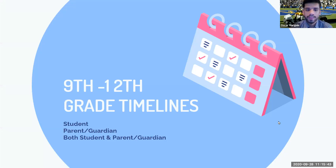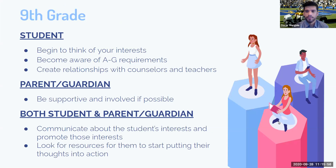Now we'll go on to the 9th through 12th grade timelines, breaking down what students, parents, and guardians should be doing at each grade level. For the 9th grade year, students should start thinking about areas of interest — it could be a topic of books you like reading, a class you have a heavy interest in, or even a TV show that reflects what you're drawn to.